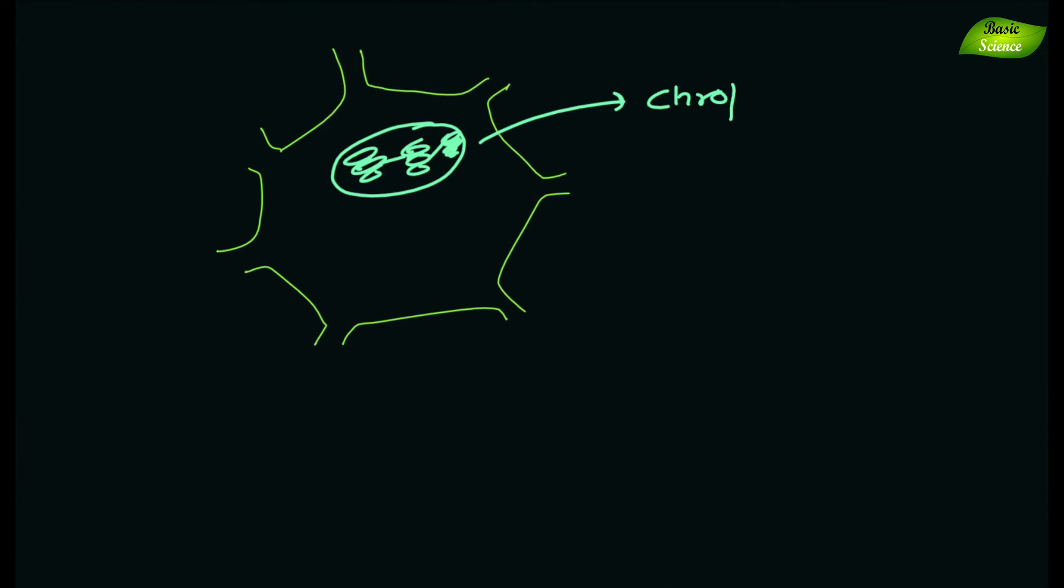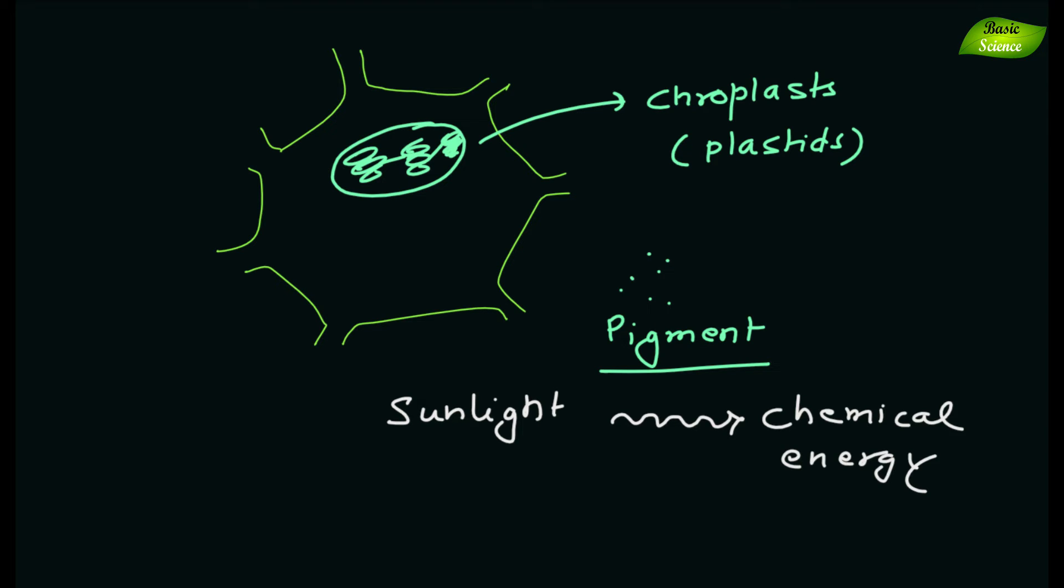The most significant plastids in plant cells are chloroplasts, which contain the green pigment chlorophyll. This converts the energy of sunlight into chemical energy that the plant uses to make its own food from water and carbon dioxide through the process of photosynthesis.